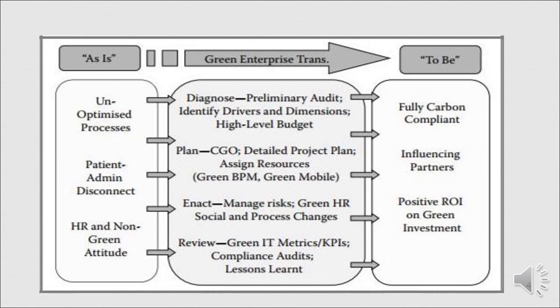Enact will involve managed risk, green HR social and process changes. You have to assess the risk — whenever you are going to implement, what may be the risks associated with this, compared to the social and process changes. Review involves green IT metrics: we will have key performance indicators for this, conduct a compliance audit, and learn from the lessons.